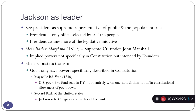Jackson believes he needs to guide the country because the people as a whole have selected him to be the person leading the nation. So Jackson turns the presidency into a much more active part of government. He begins to advance his own legislative agenda — he starts to send bills to Congress that he wants them to pass, instead of just waiting in the White House until Congress has passed a bill and it reaches his desk for him to sign or veto.